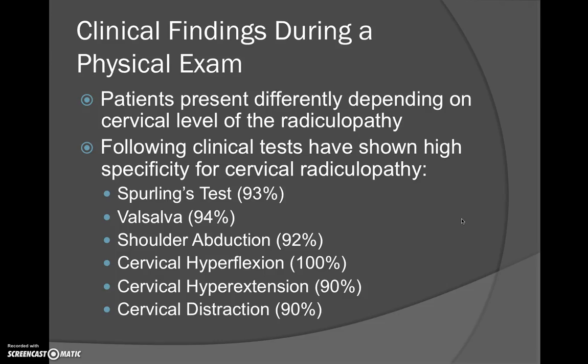Clinical findings: during a physical exam, patients present with different symptoms depending on their level of cervical radiculopathy. The following clinical tests have shown high specificity for cervical radiculopathy: the Sperling's test, Valsalva maneuver, shoulder abduction, cervical hyperflexion, cervical hyperextension, and cervical distraction.